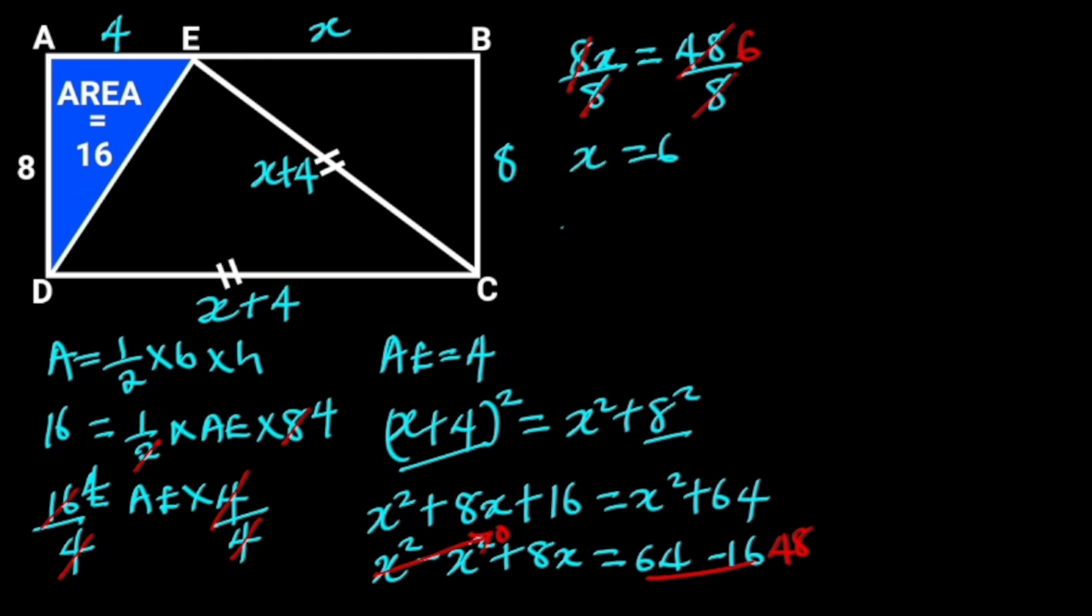Since we are looking for the area of the rectangle, let's recall that the area of a rectangle is length times breadth. The breadth of the rectangle is 8, and the length is x plus 4. Since we have x to be 6, so the length of the rectangle is 6 plus 4, which is 10. Hence, the area of the rectangle is 10 times 8, which is equal to 80 square units.